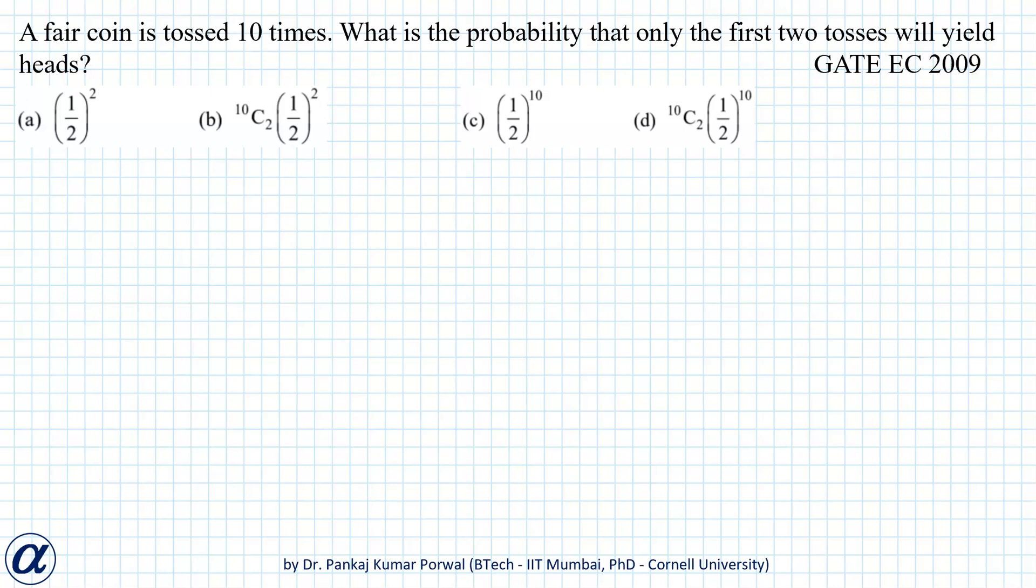In this question we are given that a fair coin is tossed 10 times and we want to find the probability that only the first two tosses will yield heads.